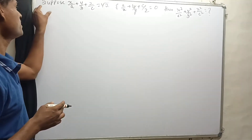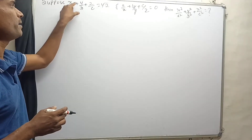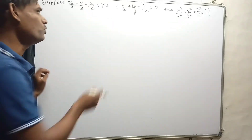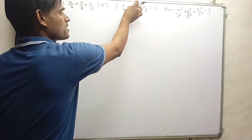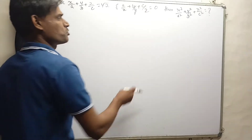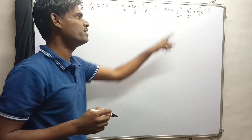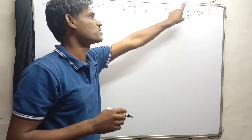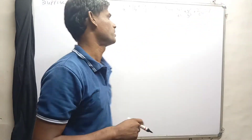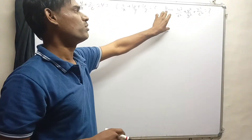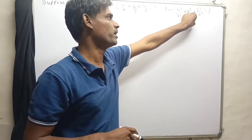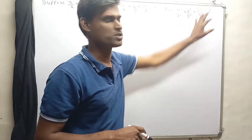The question is: suppose x/a + y/b + z/c equals root 2, and a/x + b/y + c/z equals 0. Then what is the value of x²/a² + y²/b² + z²/c²? We want the value of x²/a² + y²/b² + z²/c².